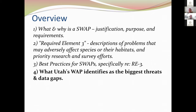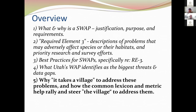There is a voluntary best practices document that many of us have followed, with specific material pertaining to required element three about threats and data gaps. I'll talk about what Utah's wildlife action plan identifies as our biggest threats and data gaps to our species of greatest conservation need and their key habitats, and then transition to Daniel's portion — on why it takes a village to address these problems and how the common lexicon and metric help to rally and steer that village.